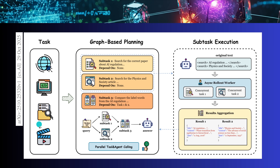Normally you had a sequential task — you search for something, you have files, you generate a video. Now with graph-based planning, some intelligence comes up and says: I can decompose this task into, say, five subtasks. Then I look at those five subtasks and determine which are dependent on others. For example, subtask 1 is dependent on nobody, subtask 2 is also dependent on nobody — so why not start them in parallel?